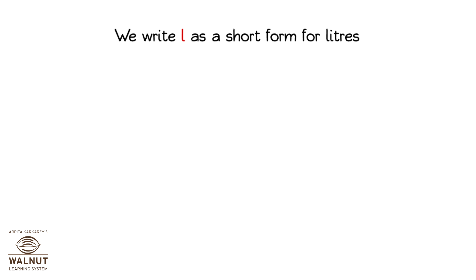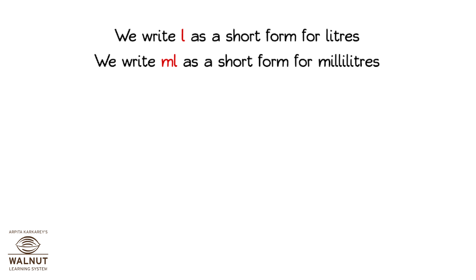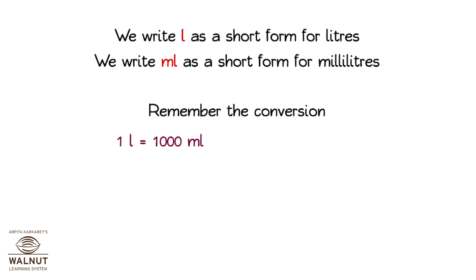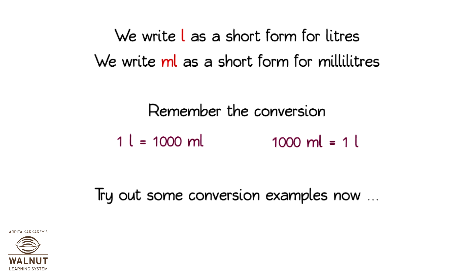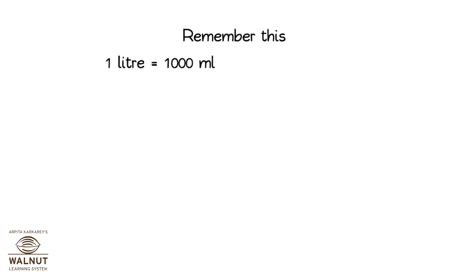We write L as a short form for litres. We write mL as a short form for millilitres. Remember the conversion: 1 litre is equal to 1000 millilitres, and 1000 millilitres is equal to 1 litre.